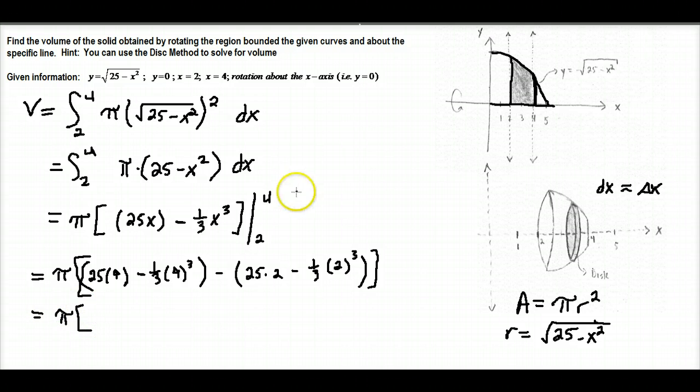So here we have 100 minus 64 divided by 3, and this will be minus 50 plus 8 divided by 3. And after we get through doing all that messy calculation and such, we'll come out to have 94 divided by 3 pi. And so this will be in cubic units.